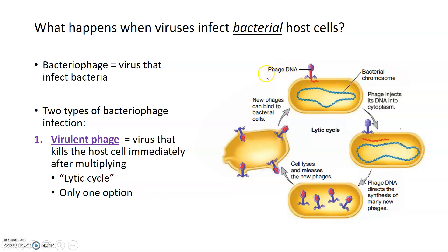When a virulent phage infects a bacterial cell, the phage attaches to the outside of the bacterial cell, then injects its DNA into the cell. The viral genome, shown in red, is used to synthesize other viral genomes as well as all the proteins that make up the capsid structure of the new virions. Those virions assemble and are then released by lysing or killing the bacterial host cell — basically bursting out — and the new virions go on to infect other bacterial cells.